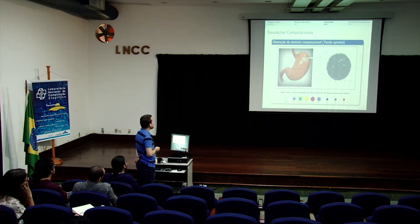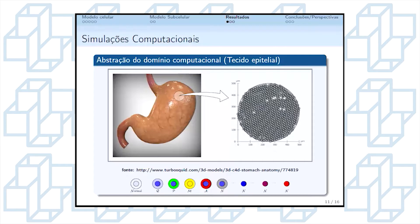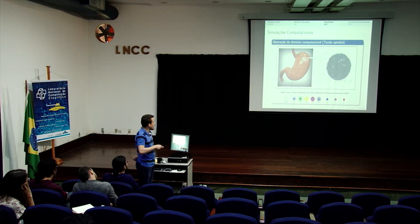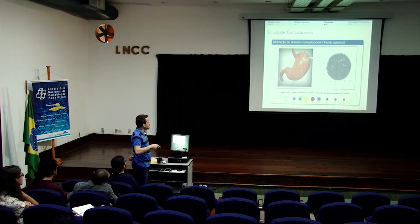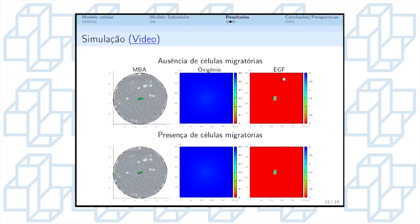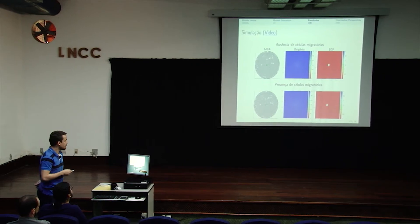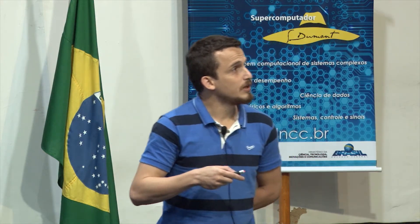Para verificarmos nosso modelo, fizemos uma simulação computacional adotando uma abstração de domínio computacional de um tecido epitelial, utilizando a seguinte notação para células normais e tumorais: quiescente, proliferativa, migratória, apoptótica e necrótica. A célula necrótica diferencia-se pela sua calcificação, onde o nível de calcificação, representado de azul para vermelho, representa a maior intensidade. O domínio computacional do modelo de agentes à esquerda utiliza um domínio circular com células normais e quatro células tumorais ao centro; ao meio, o domínio da dispersão de oxigênio no microambiente; e à direita, dos fatores de crescimento epidérmico. Nós fizemos dois cenários: sem células migratórias e com a presença de células migratórias.